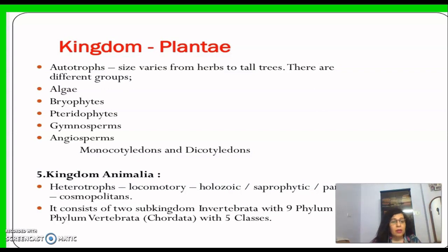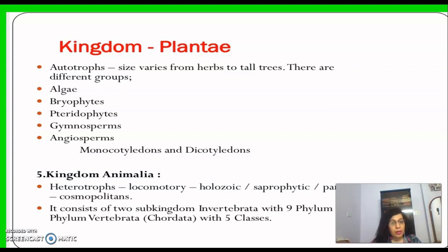Kingdom Animalia consists of organisms not present in Monera, Protista, or Fungi. They depend on others for their food, are locomotory (they move from one place to another), and their mode of nutrition is holozoic, saprophytic, or parasitic. They are also cosmopolitan — present everywhere on earth, in air, water, and land. It consists of two sub-kingdoms: Invertebrata with nine phyla and Vertebrata with five classes.